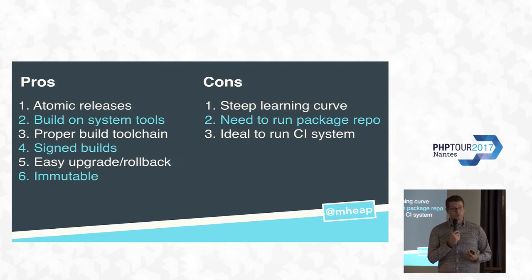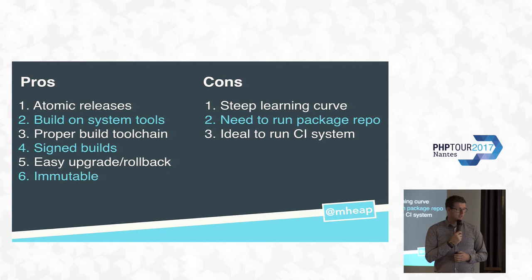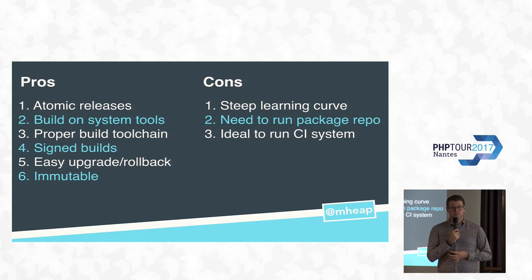The pros column is starting to outweigh the cons. This level of deployment is pretty awesome and is enough for most companies. It provides atomic releases, easy upgrade and rollback, a proper build toolchain including signed builds, and it builds on top of system tools maintained by people who do it full-time. Releases are immutable — if it worked once, it'll work in the future. However, none of this comes for free. The learning curve is even steeper than Capistrano. You need to build all these packages, distribute them to all your servers, and ideally run a CI system too. There's also no guarantee that just because it works in staging, it'll work in production — environments might differ: CentOS 6 in staging, CentOS 7 in production, different PHP versions, different live user data.